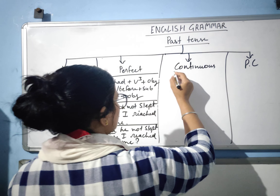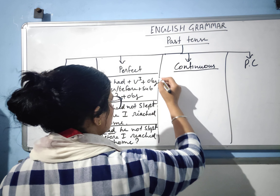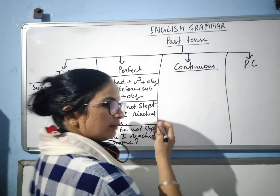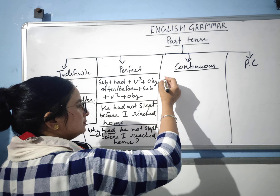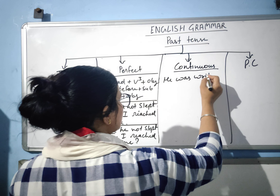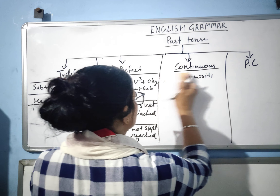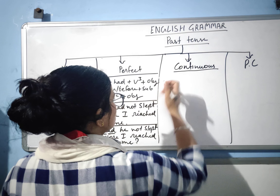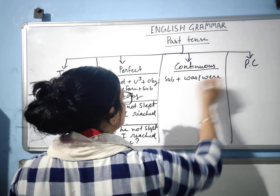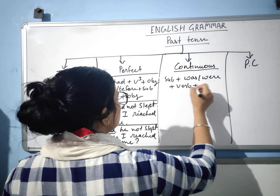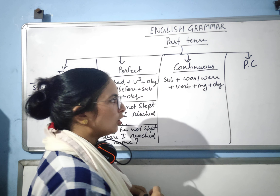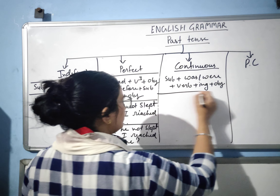Now we will learn about past continuous tense. In past continuous, 'tha', 'thi', 'the' come at the end of the sentence in Hindi. The structure is: subject plus 'was' plus verb plus ing, plus object. This is the structure of past continuous tense.